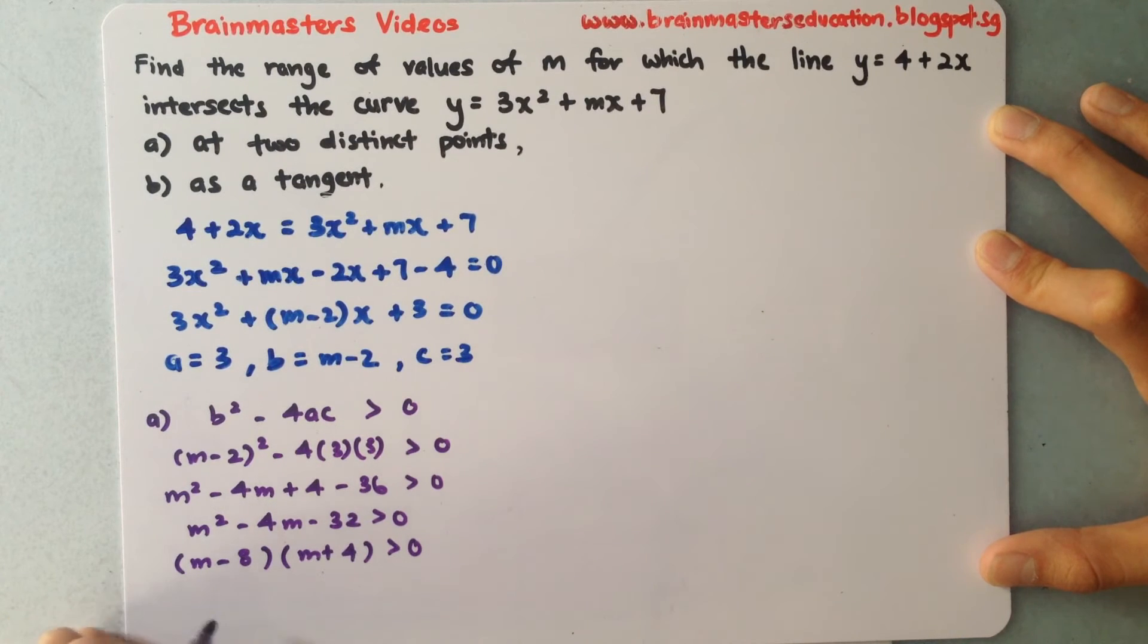Using the previous chapter, we find the critical values are 8 and -4. Since we want values greater than 0, m must be